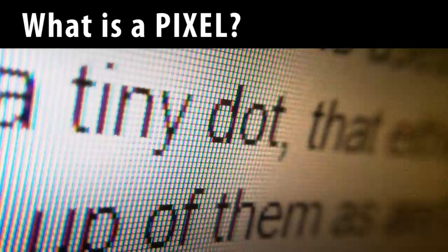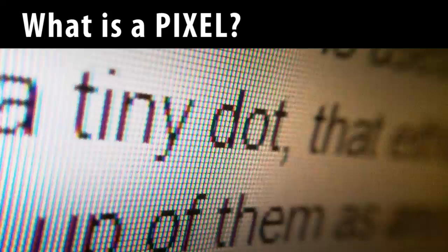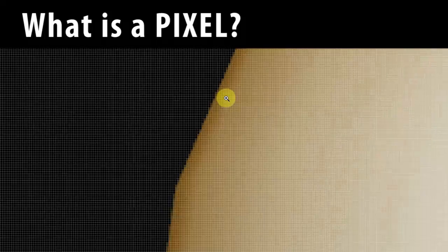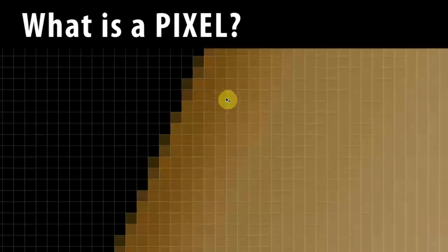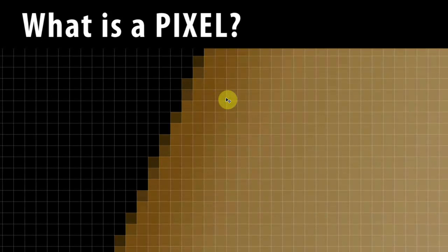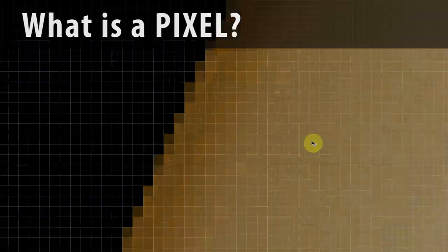Your computer screen is made up of them, as are image sensors and digital cameras. In terms of computer graphics software, a pixel is one of the individual blocks that make up raster images, such as JPEGs or PNG files.